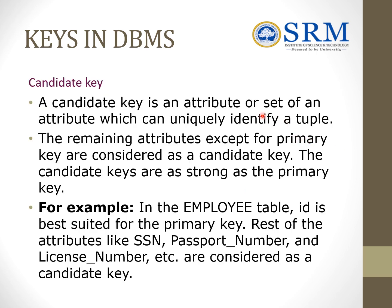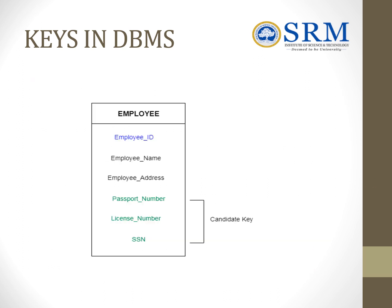Coming to the candidate key: a candidate key is an attribute or a set of attributes which can uniquely identify a tuple. Remaining attributes except the primary key are considered candidate keys. Candidate keys are as strong as the primary key. For example, in the employee table, ID is best suited as the primary key, and the rest of the attributes like SSN number, passport number, and license number are considered candidate keys, as they can also be used to identify a particular record in the table.